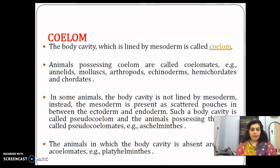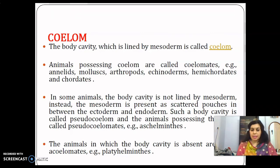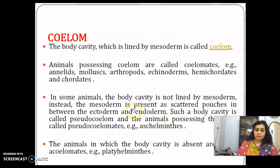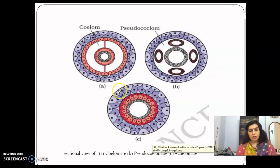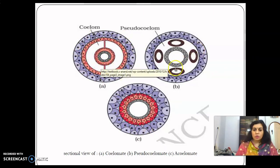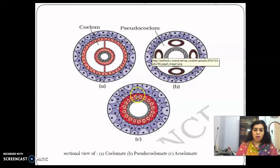The next criterion is the body cavity, or coelom, which is a cavity lined by mesoderm. Animals possessing a true coelom lined by mesoderm are called coelomates. Animals without a coelom are called acoelomates — for example, Platyhelminthes. Animals with a false body cavity where mesoderm is present only as scattered pouches are called pseudocoelomates.